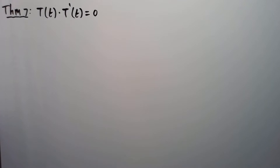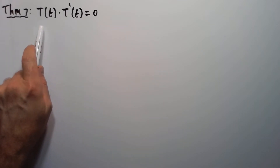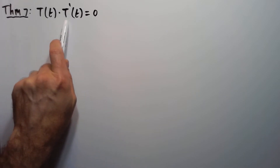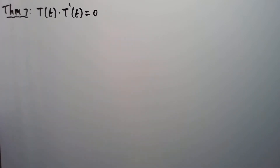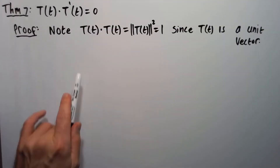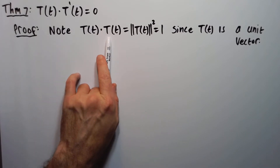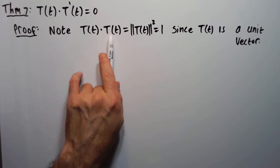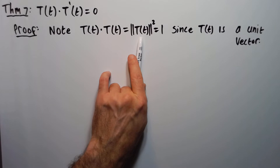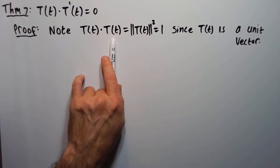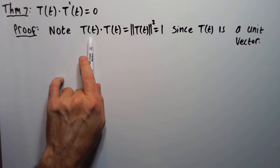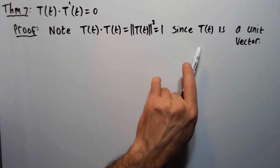Let's look at Theorem 7. It states that the unit tangent vector capital T dotted with the derivative of the unit tangent vector T prime equals 0. Let's look at the proof. First note: capital T dotted with itself equals the magnitude of T squared. Since T is a unit vector by definition, its magnitude is 1. So capital T dotted with capital T equals 1.